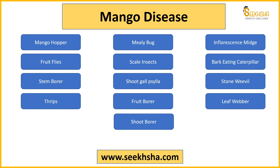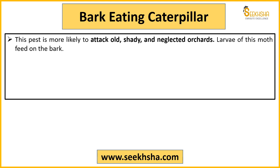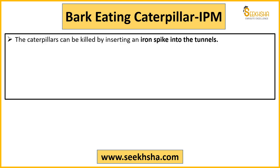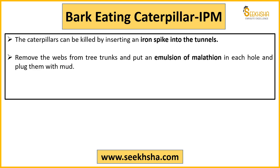Finally, bark eating caterpillar — yeh basically purane shady aur neglected orchards ko attack karta hai. Basically jo isme larvae hota hai woh bark ke upar hi feed karta hai, isliye isko bark eating caterpillar kehte hain. Yeh tunnel bana leta hai bark ke andar — chote chote tunnels bana leta hai — aur phir stem ke andar bhi yeh enter kar jaata hai. April se December mainly yeh feed karta hai aur ek generation ek saal mein dekhne ko milti hai. IPM mein aap kya kar sakte ho: sabse pehle jo tunnel bani hai caterpillar ne toh usme ek choti si iron ki seekh ya iron spike daalo — toh basically it will die. Aur woh tunnel iron spike se, phir aap uske web ko remove bhi kar sakte ho. Aur jab ek baar web ko remove karo toh uske upar malathion ko apply kar do jahan par woh hole hai — aur phir us hole ko band karne ke liye geeli mitti ka istemal kar lo.